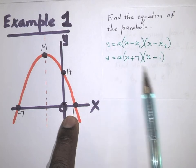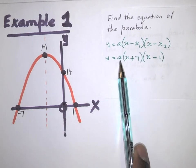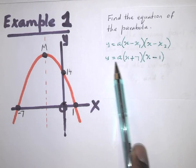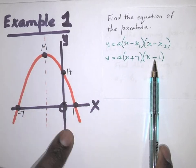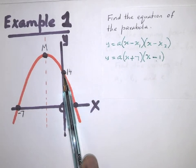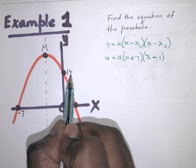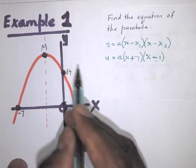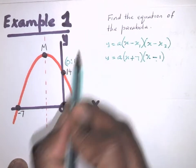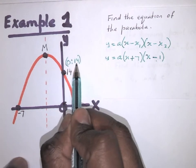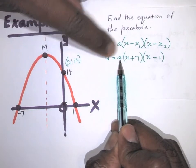Now what's left is to find the value of a. To find a, you use another point that you haven't already used, and that point must be on the graph. The only other point on the graph is the y-intercept, shown as 14. The x-value there is zero, so this point is (0, 14). We know x = 0 and y = 14.